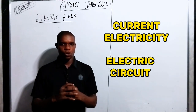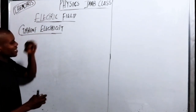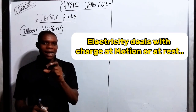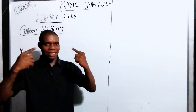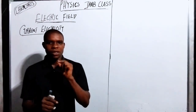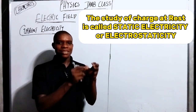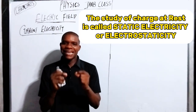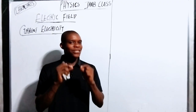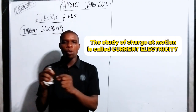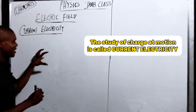We'll talk about those two parts in this video. Now let's look at current electricity. What is electricity? Electricity is charge at motion or at rest. The study of charge at rest is called static electricity or electrostatics. The study of charge at motion is called current electricity, which we are going to talk about in this class.